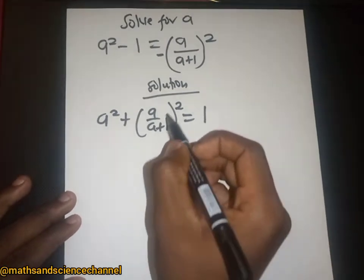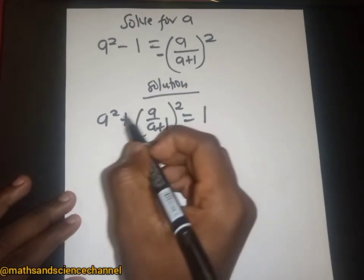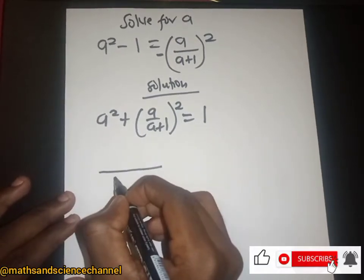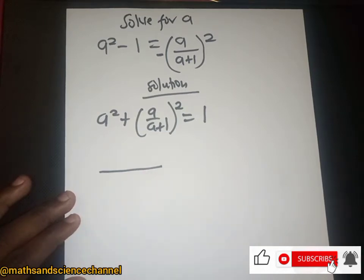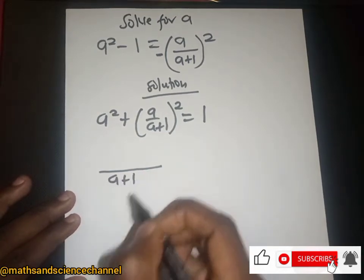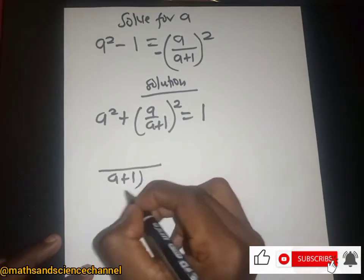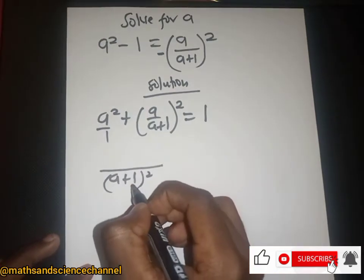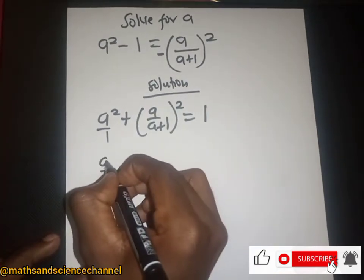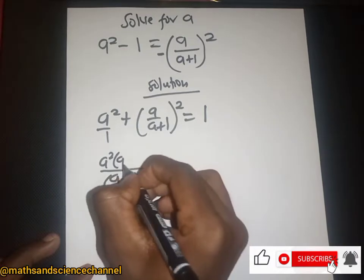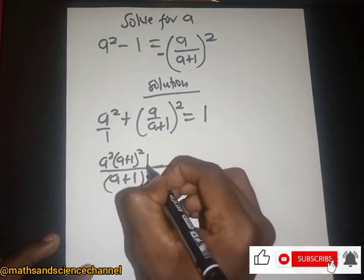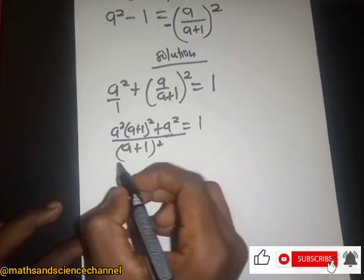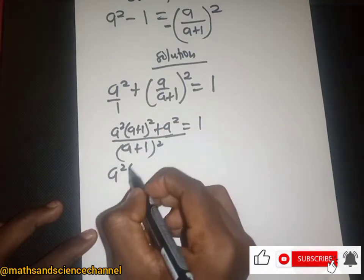Now when we expand this whole thing, we have a plus one here. We square this — it goes into that — and we have a squared multiplied by (a plus one) all squared, then we are just left with a squared being equal to one.